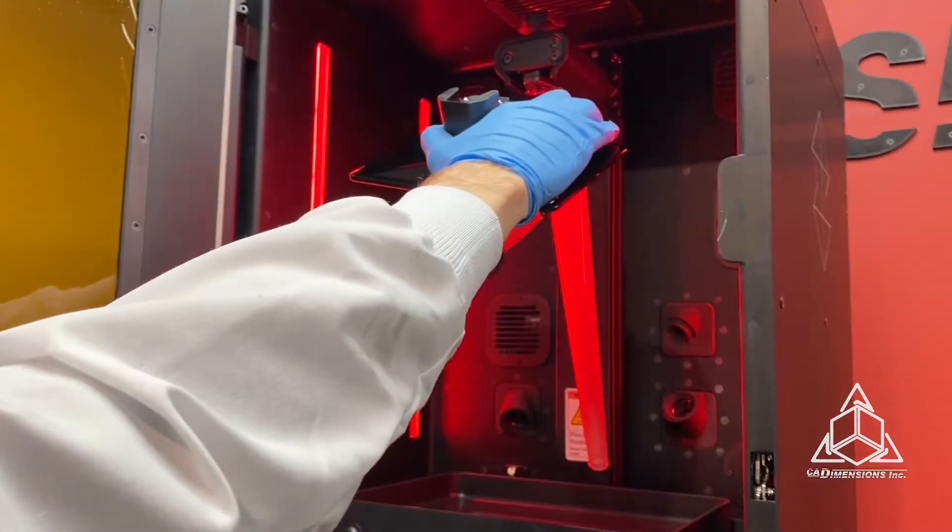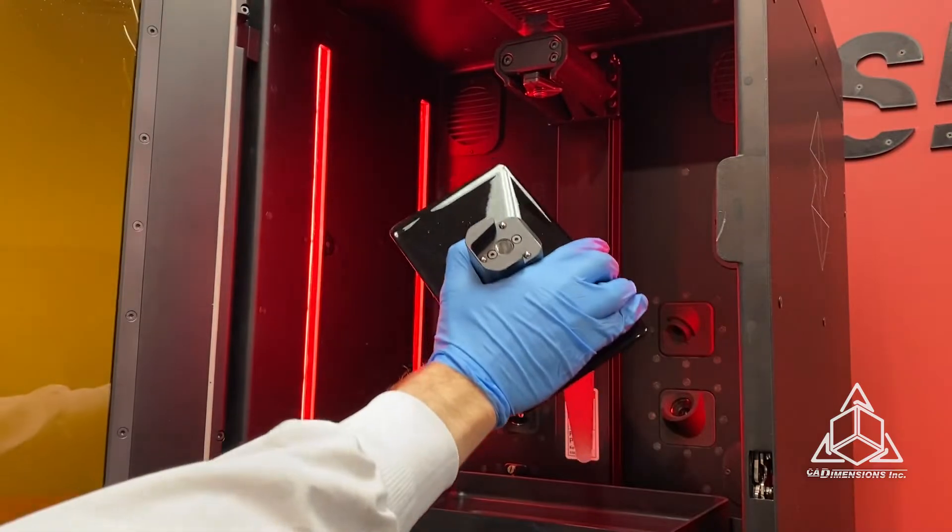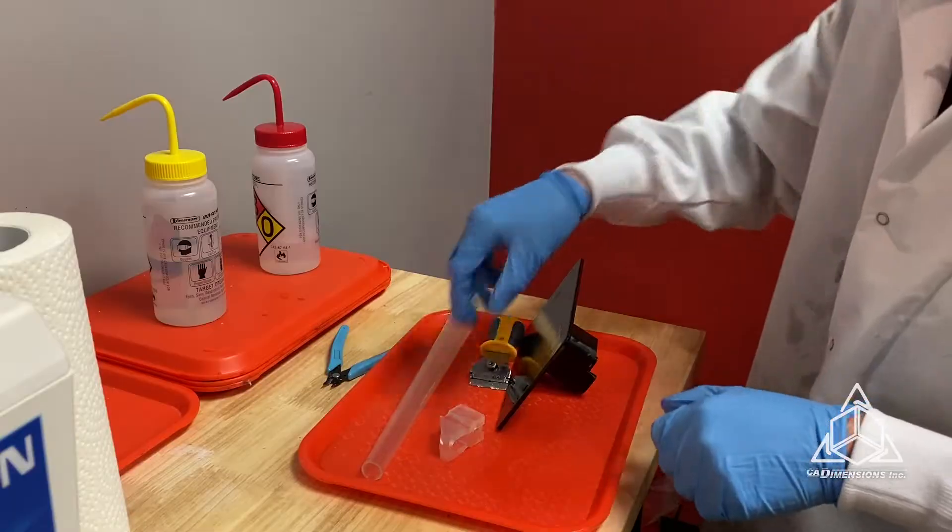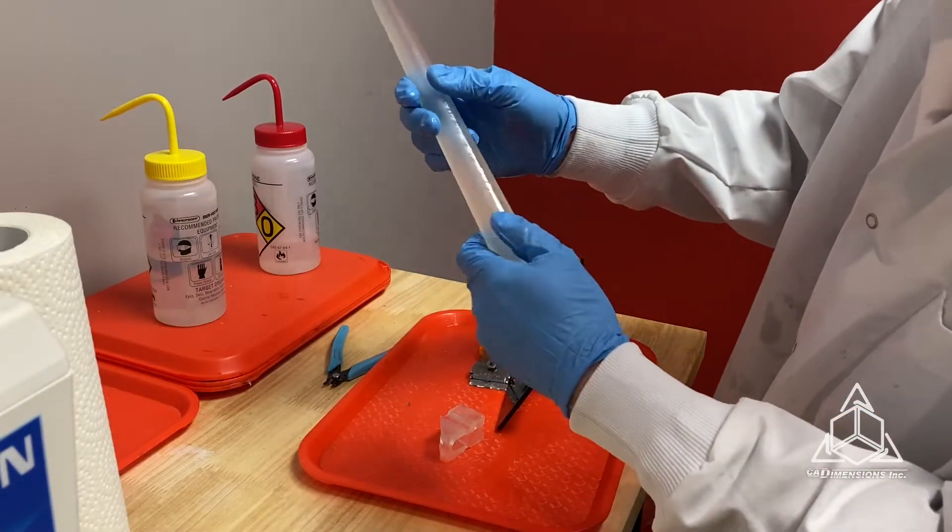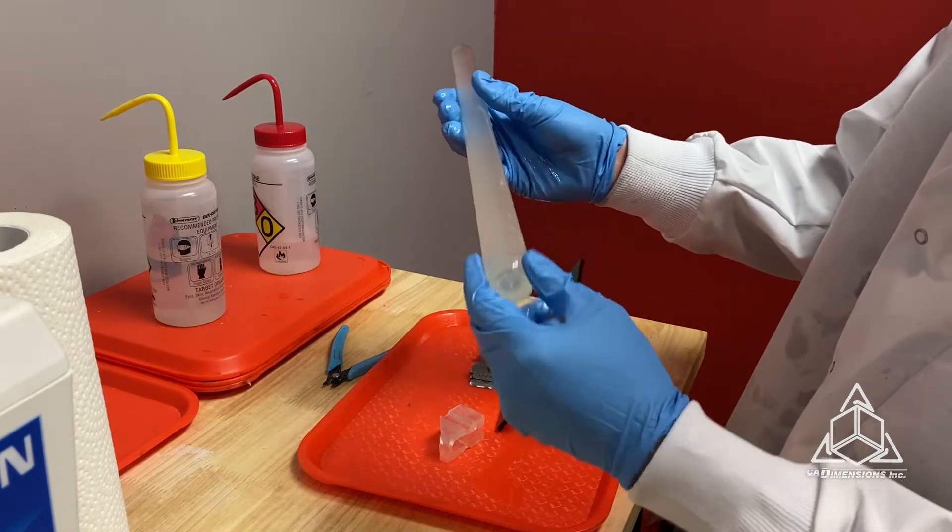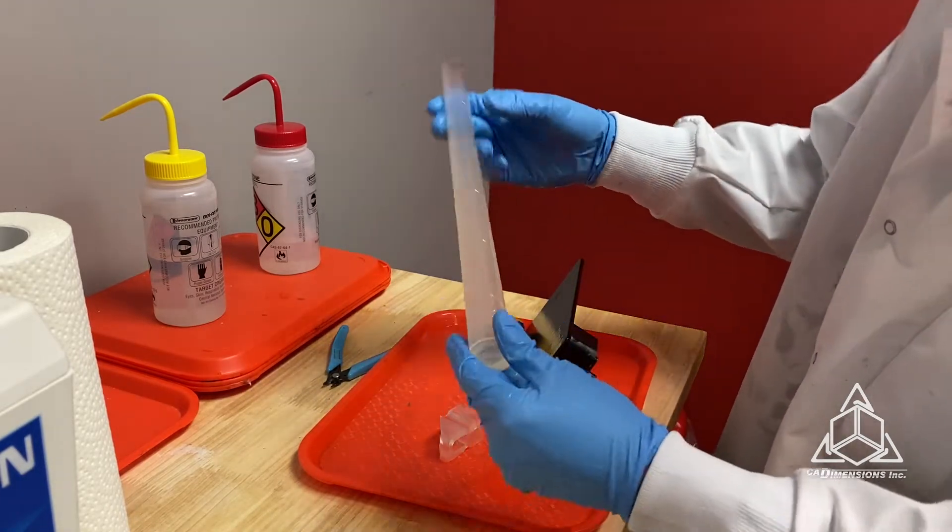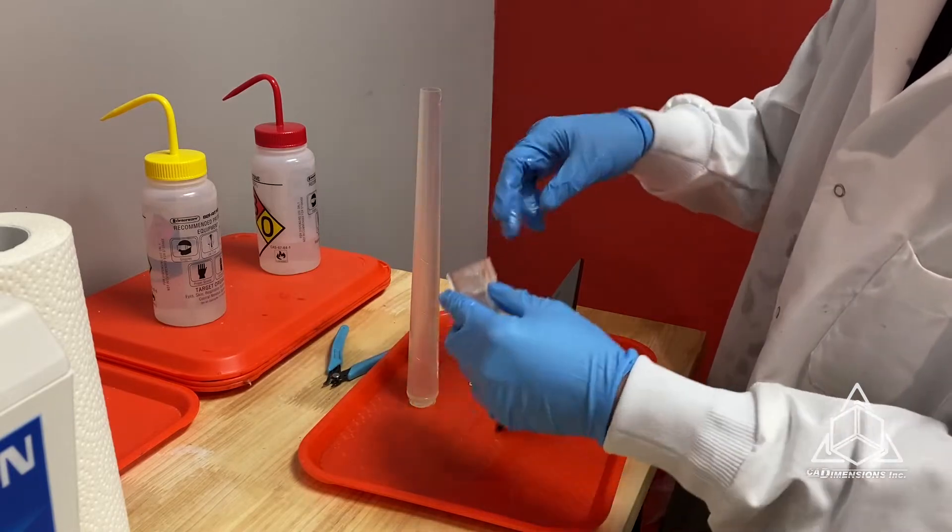Many other flexible materials show a greater influence from the rate of applied force, but not Quick Gen 500. So its main benefits are its fast printing, it's economical, its balance of flexibility and stiffness, its accurate parts and near colorless parts as well.